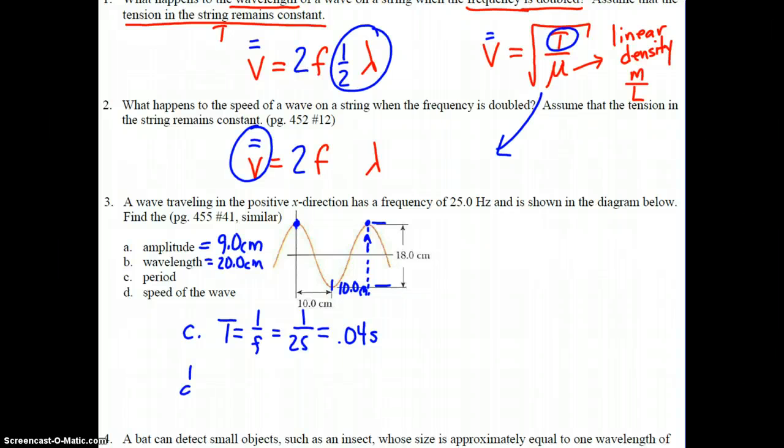Lastly, part D: they want the speed of the wave. V equals f lambda. The frequency is 25 hertz. The wavelength we found would be 20 centimeters. We'll put that in standard units—that would be 0.2 meters. Multiplying gives us, well, one-tenth of 25 would be 2.5, so two-tenths would be double that, so five meters per second.